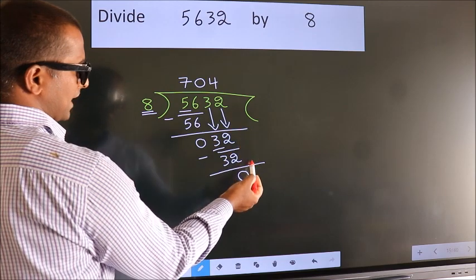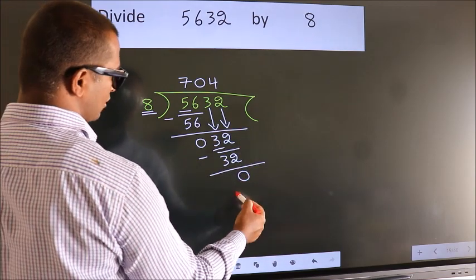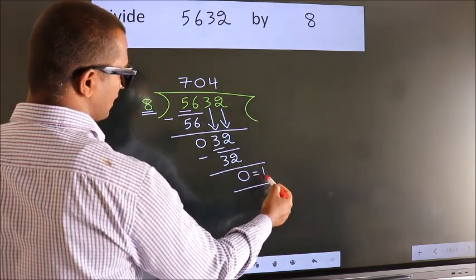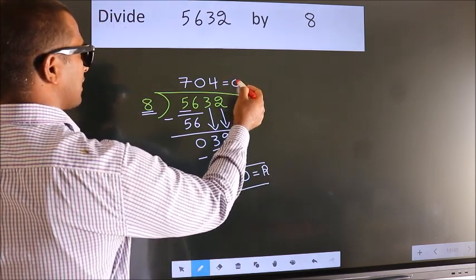No more numbers to bring it down. So we stop here. This is our remainder. This is our quotient.